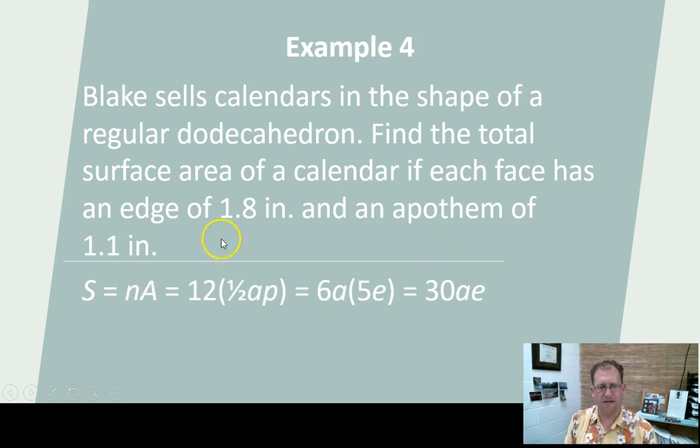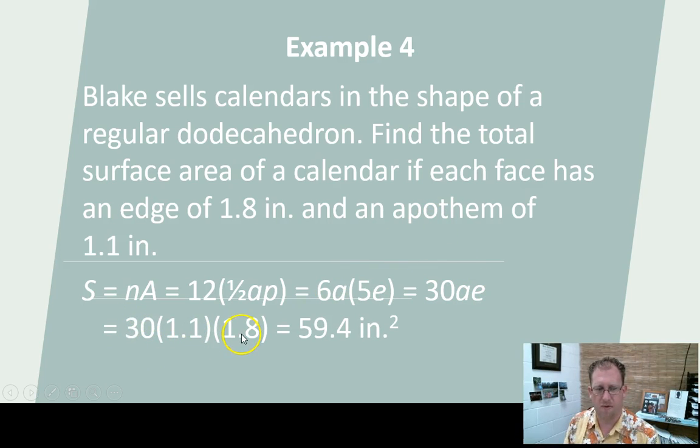So 1.8 times 5 is going to be 6 times the apothem. The 12 times 1/2 is 6 times the apothem of 1.1 times 5 times the edge, which is 1.8. And then you could combine this again to be 30 times the apothem times the edge. So let's just do that now. 30 times the apothem times the edge is 59.4 square inches. That would be the total surface area of the 12-sided soccer ball-ish calendar. I've never seen one, but I think it's a cool idea. And that's it.